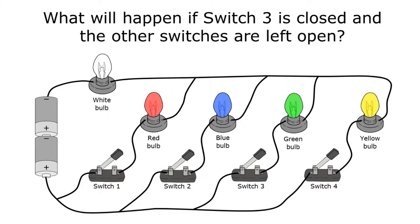This question asks: what will happen if switch 3 is closed and the other switches are left open? We're going to close switch 3, which means electricity would be able to go through it now. You may look at this and think the green bulb will turn on.